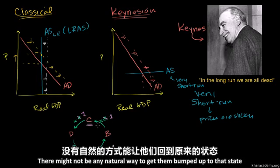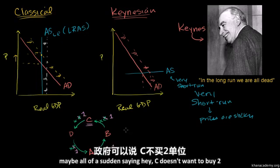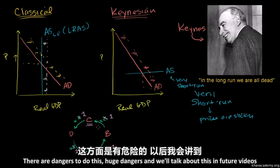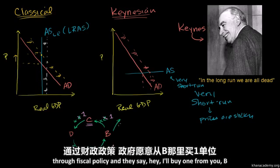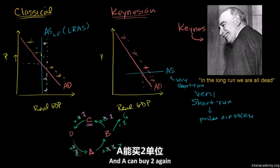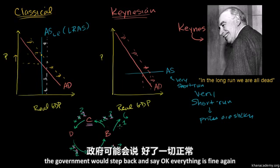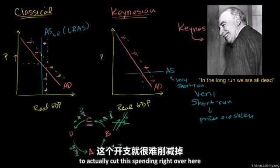And now they're going to operate in this depressed state, and there might not be any natural way to get them back to buying two units from each other without some outside actor — maybe the government — stepping in and saying, hey, if C doesn't want to buy two, I'll buy two temporarily. There are huge dangers to this, and we'll talk about that in future videos. The government tries to shift the aggregate demand curve through fiscal policy: I'll buy one from B, and then B can buy two again, A can buy two again, D can buy two again, and then C can buy two again. In an ideal world, the government would then step back and say everything is fine — but as we know, it's very hard once the government starts spending money to actually cut that spending.